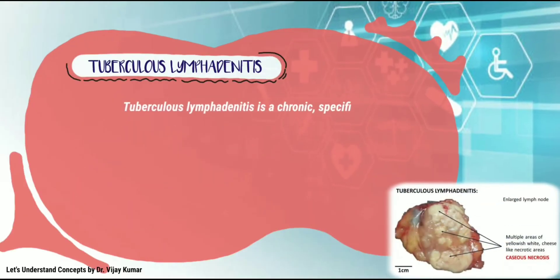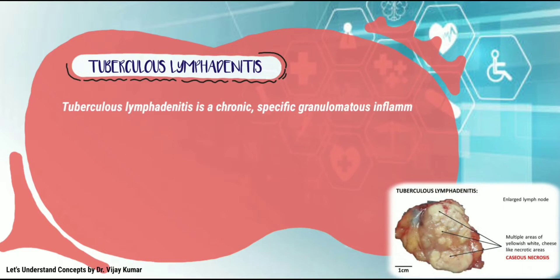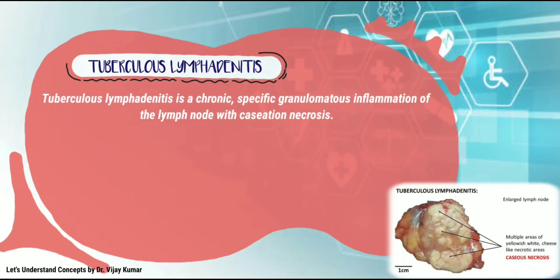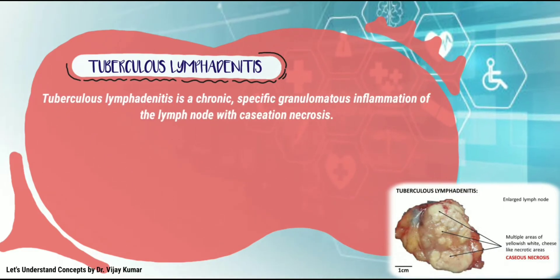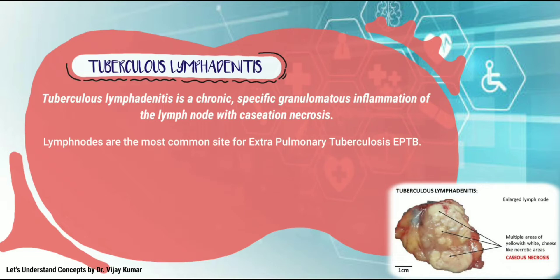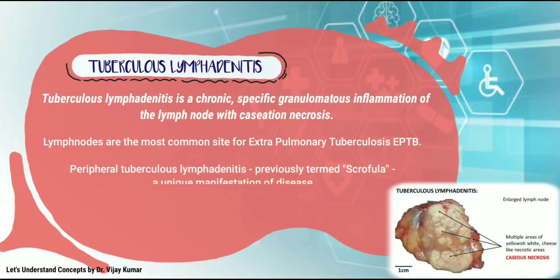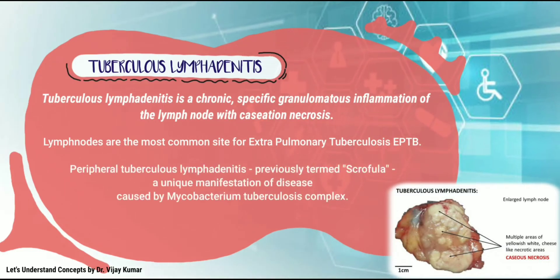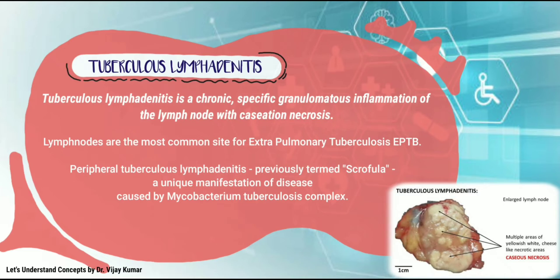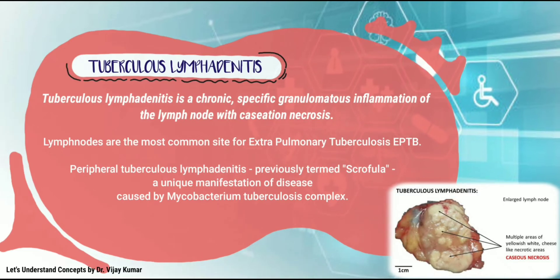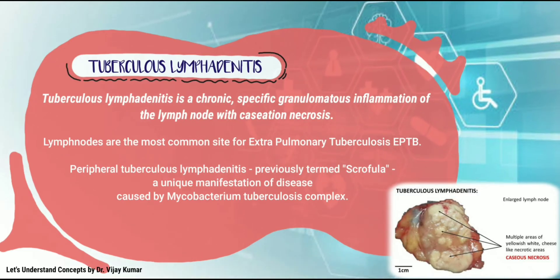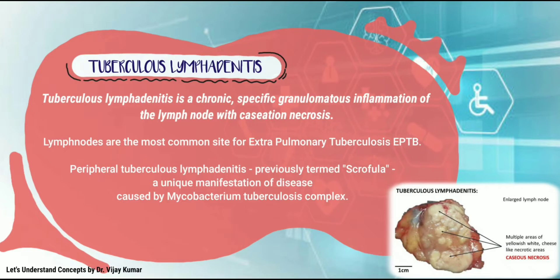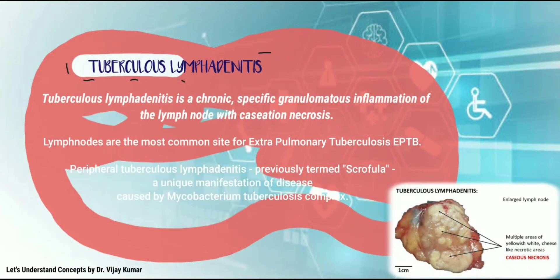Tuberculous lymphadenitis is a chronic, specific granulomatous inflammation of the lymph node with caseation necrosis. Lymph nodes are the most common site for extrapulmonary tuberculosis. Peripheral tuberculous lymphadenitis, previously termed scrofula, is a unique manifestation of disease caused by Mycobacterium tuberculosis complex.